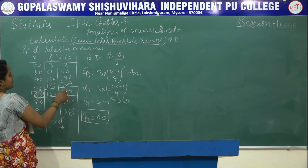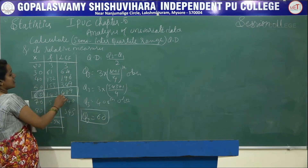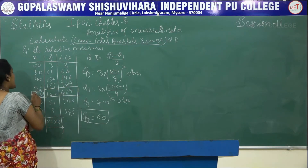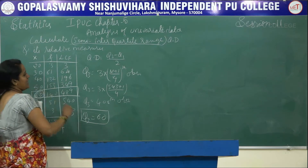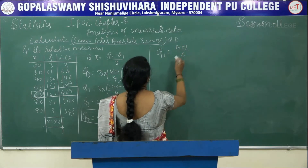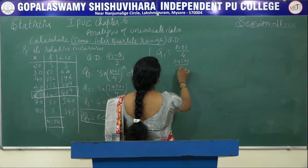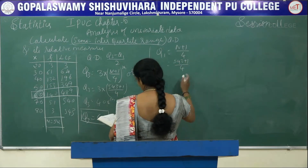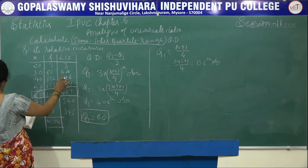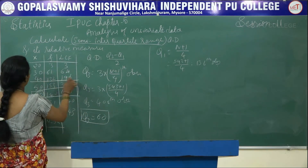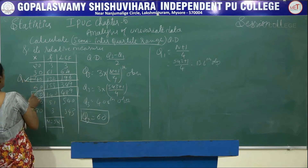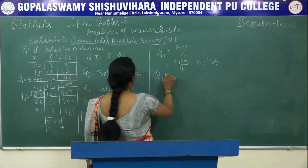To clarify: we find the 408th observation in the LCF. The LCF value is 489, and the corresponding X value in the same row is Q3, which equals 60. Similarly, find Q1: Q1 is the N plus 1 by 4 observation, which is 543 plus 1 by 4, giving the 136th observation. It falls in LCF value 196, so Q1 equals 40.